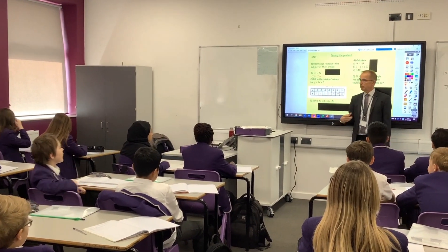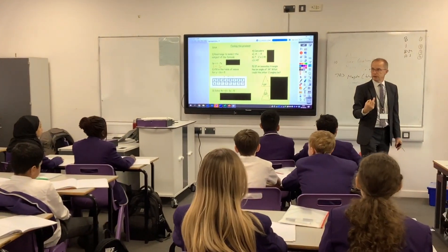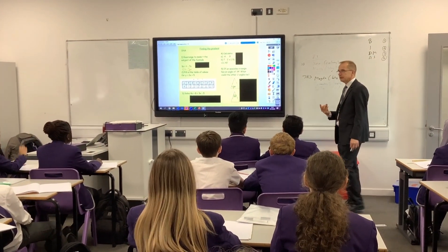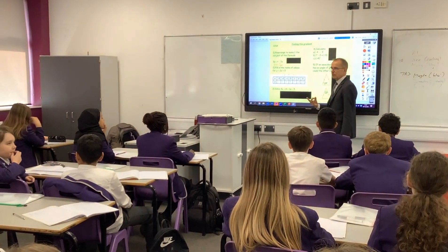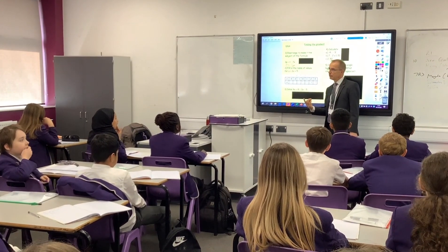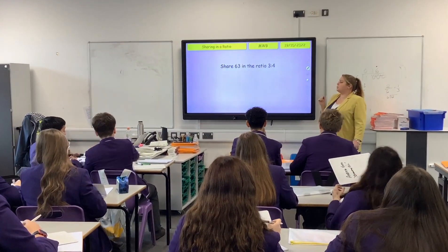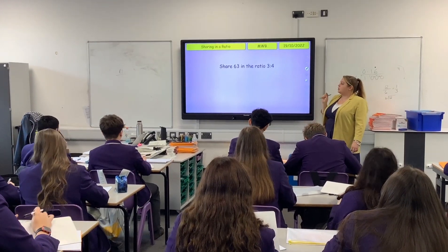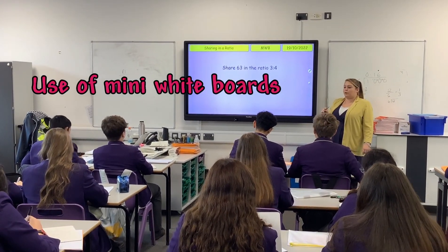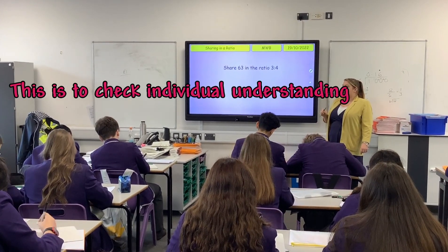You've got the 3p bit — it's not minus 7s. What do we need to do with the 7s? Can anybody help you out? Do you have to add the 7s? Why? Because we're doing the inverse. The first thing on your boards that I'd like you to do — can you please share 63 in the ratio of 3 to 4? Not disgusting like the answers on the board.